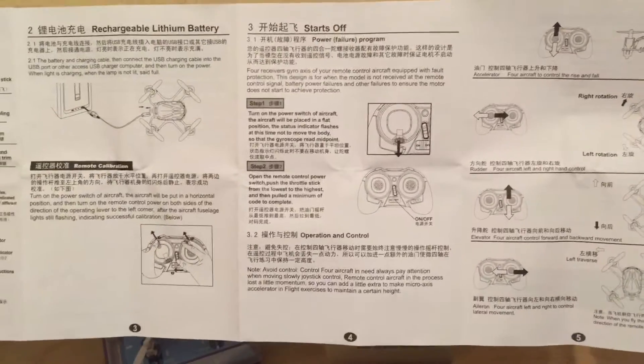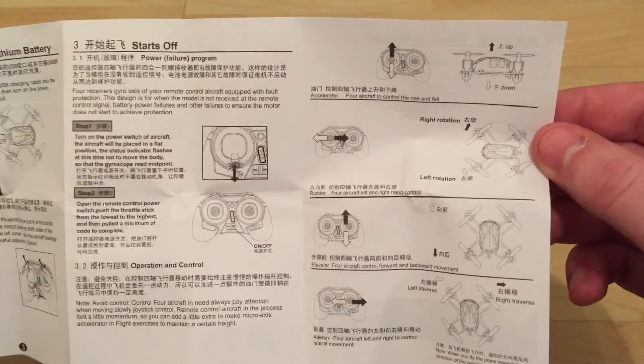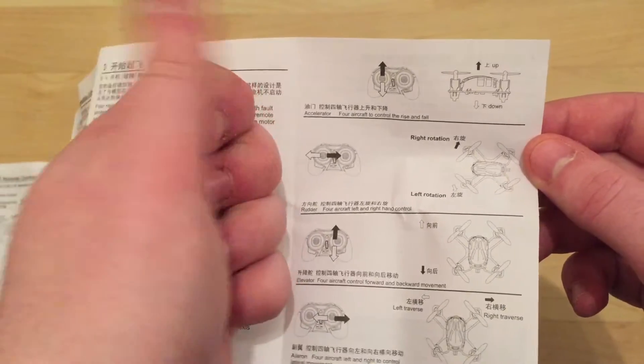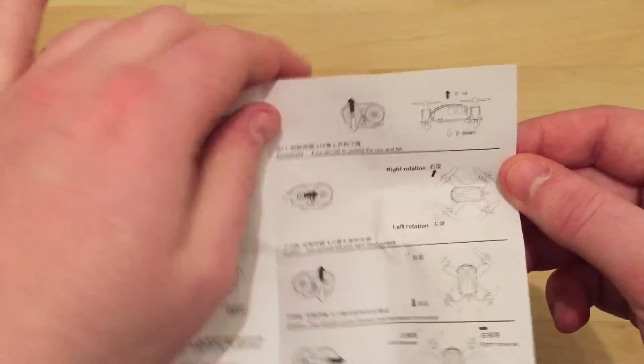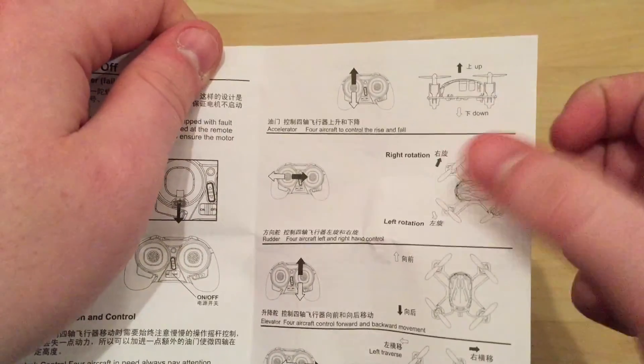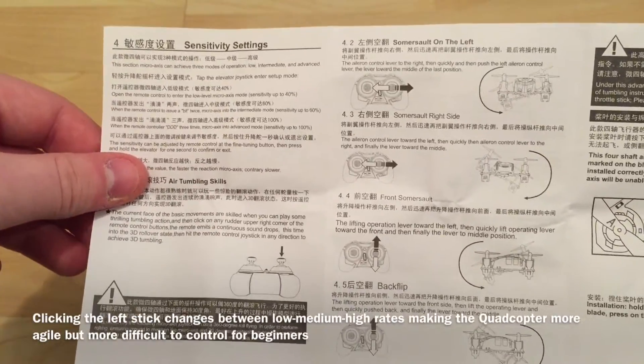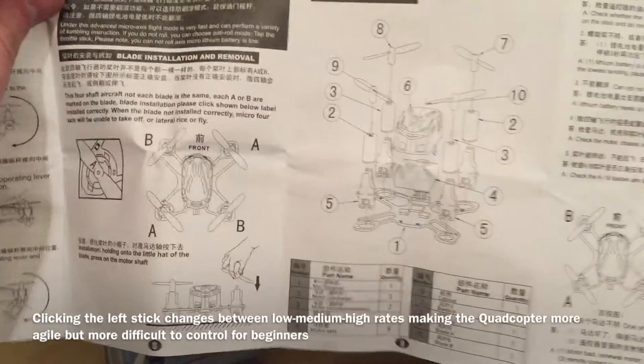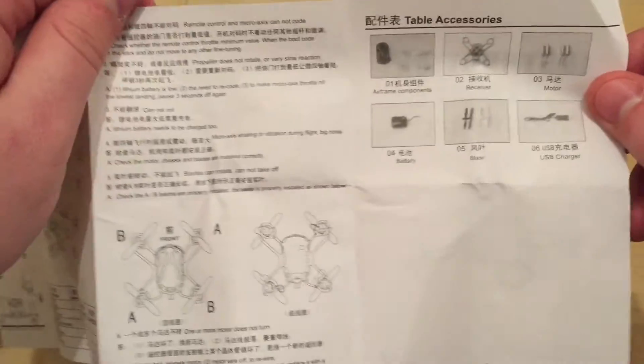I get a few bits of information about how to switch it on, how to pair it, how to charge it, what the various controls are. Usual mode two controls. Left stick up, forward and backwards is go up and down, turn left and right to rotate. And right stick is forward, back and then straight, side way, left and right. And then sort of overview of all the parts that are included. And that's the end of that.